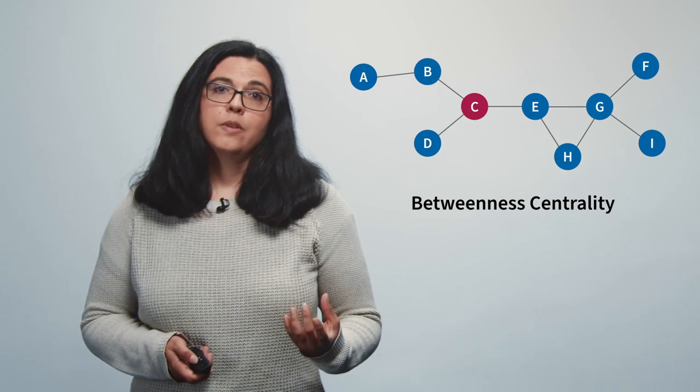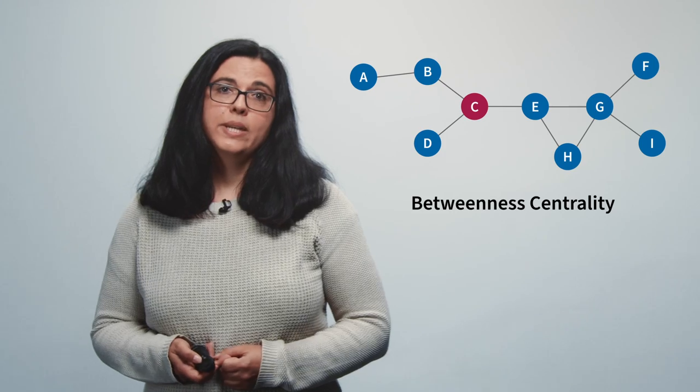Actually there's even another measure of centrality which we call betweenness. And this is the node C. Node C shows the highest betweenness centrality. Why is that? Betweenness considers the number of shortest paths running between pairs of nodes through a given node. So it's a measure for how much control a given node has on the overall information flow in a network. And in other words we measure the probability that communication between pairs of actors will run via a given actor.